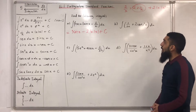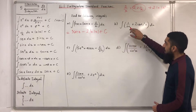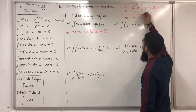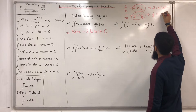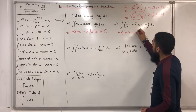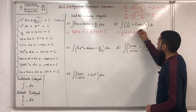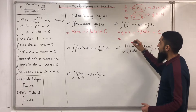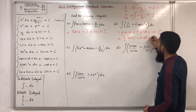Part b: integral of 1/(2x) plus 2 cosec²x dx. The first term, 1/(2x), can be split into (1/2) multiplied by 1/x, which integrates to (1/2) ln|x|. And 2 cosec²x integrates to minus 2 cot x. The plus and minus becomes minus, giving (1/2) ln|x| minus 2 cot x plus c.